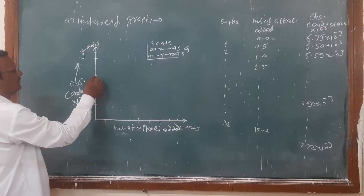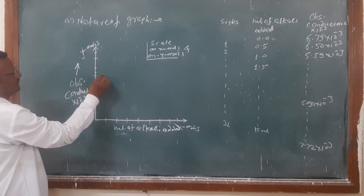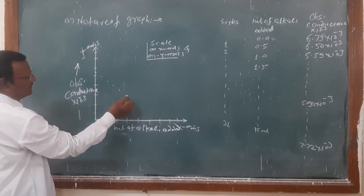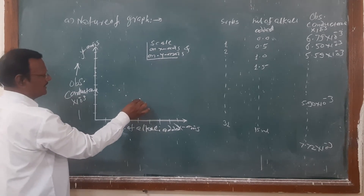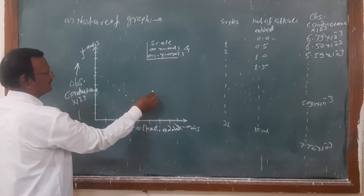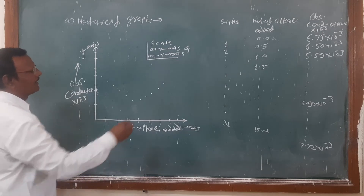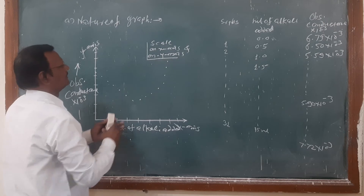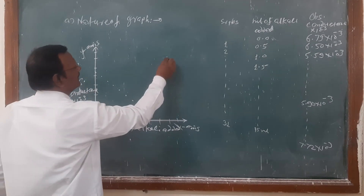Without addition of alkali, the first reading is plotted. Then second, third, fourth, fifth, sixth, seventh additions are plotted and those will be just decreasing. After some point, the readings will start increasing again. We have to plot these points and draw the nature of the graph accordingly.